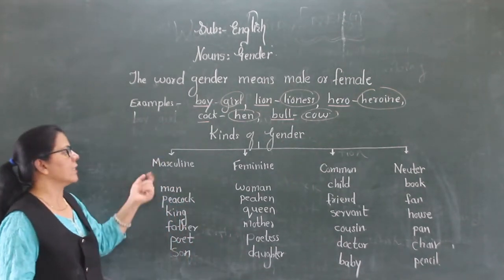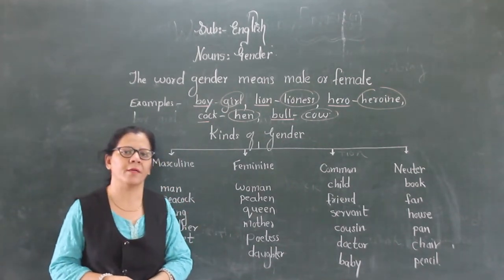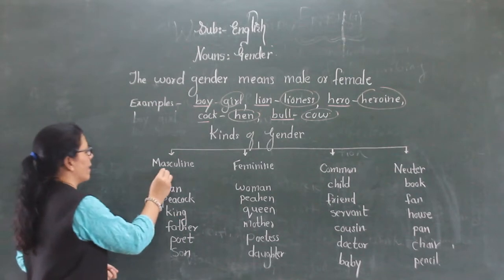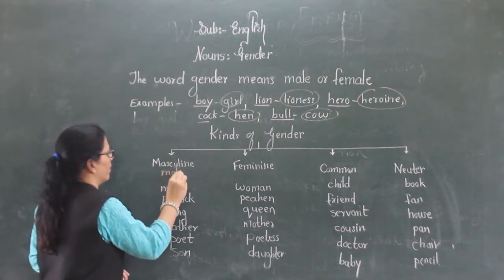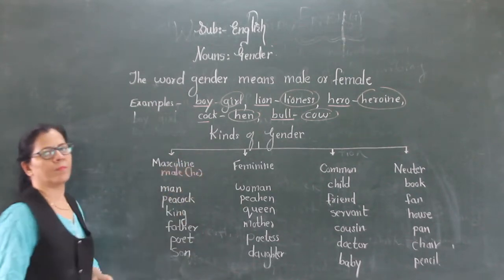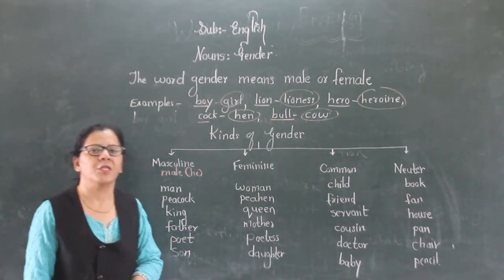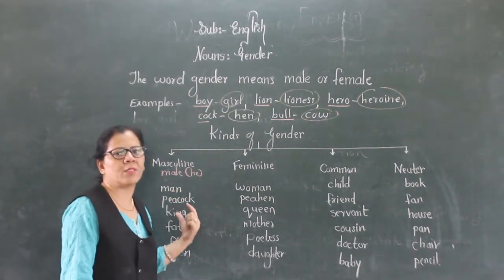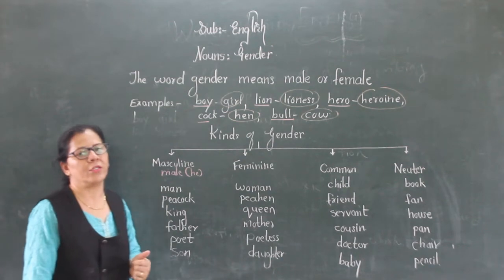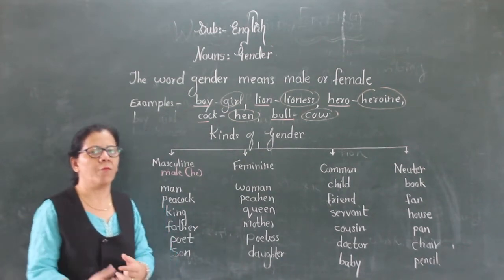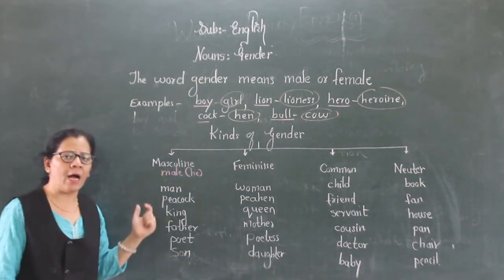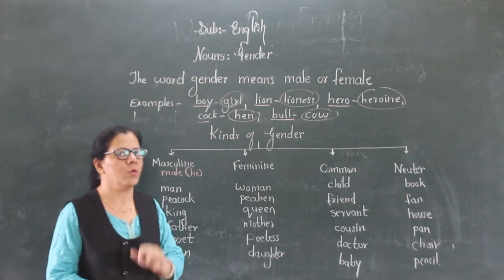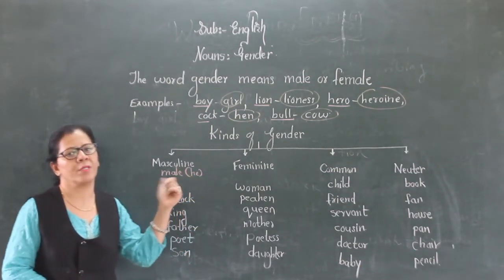So first is masculine. What do you mean by masculine? Masculine means the noun which denotes male — that is 'he' words. Those nouns are said to be in masculine gender. The noun that denotes male is said to be in masculine gender. So that is the definition of masculine gender.